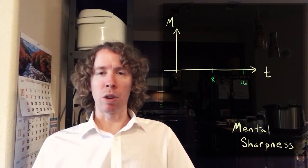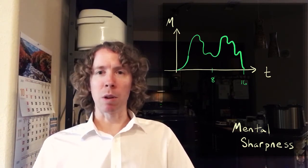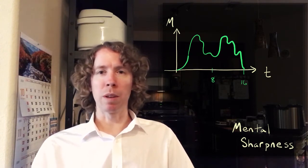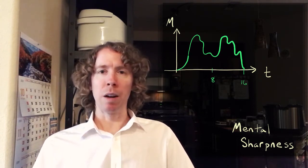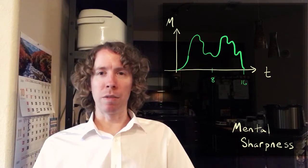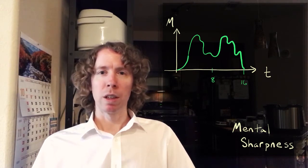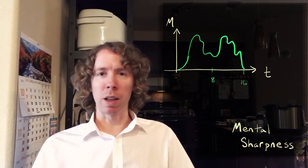And so your graph might look something like this as time goes on, your mental sharpness is going to go up and down. And the function, the actual equation, M of T might look something like this.